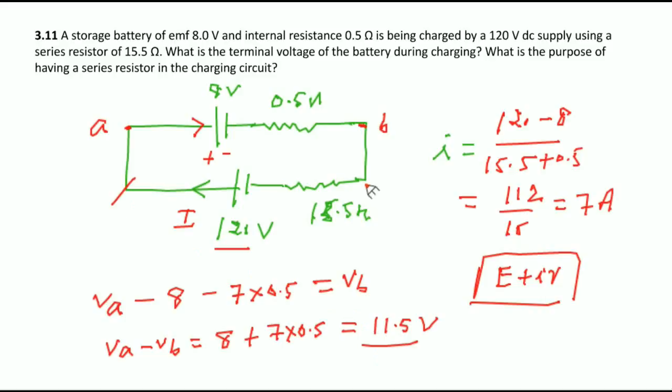Because potential difference across this is not 120 volt, always less than 120 volt. The purpose of series resistance is to control the current drawn from external supply. Otherwise, if you do not have R, current will be very high. We always put external resistance to control the current in the circuit.